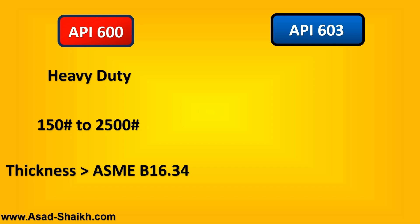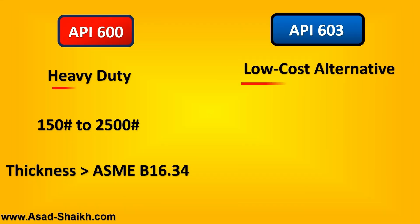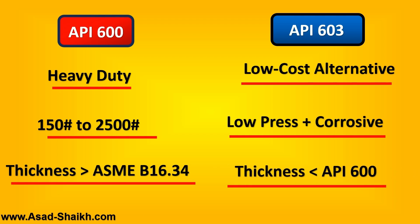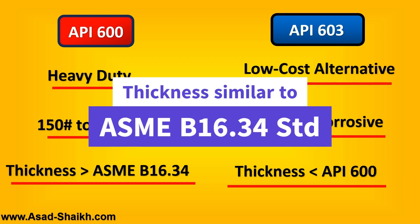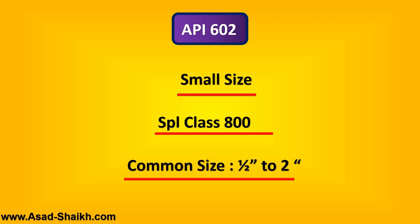API 600 is a heavy-duty valve with ratings from 150 to 2500 pound, and its wall thickness is even greater than ASME B16.34, which is the standard for flange rating for valves. However, this would be a very costly valve. The industry wanted a low-cost alternative for low-pressure but corrosive applications — where corrosion-resistant materials are still required but thickness can be reduced. That is API 603, which is similar to ASME B16.34. API 602 is used for very small gate valves, especially Class 800, common in refineries for half-inch to two-inch valve sizes.